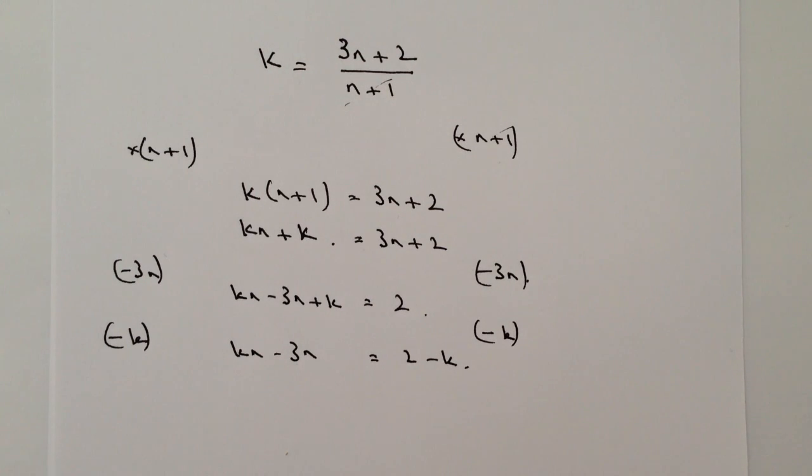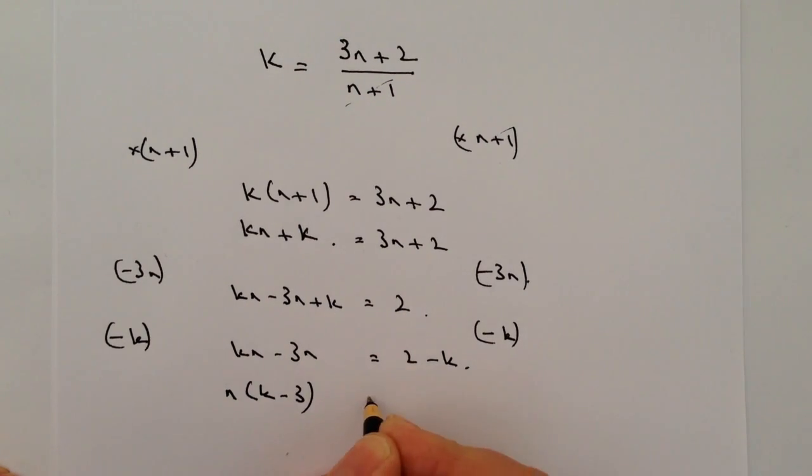So the easiest way of dealing with this is then factorising my n terms because then I can isolate n on its own as being n times k minus 3 equals 2 minus k.